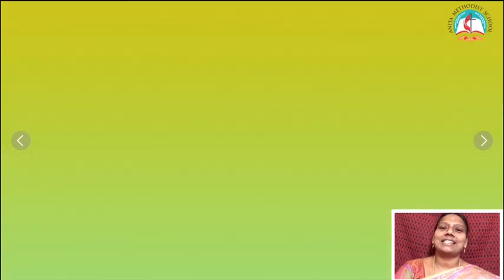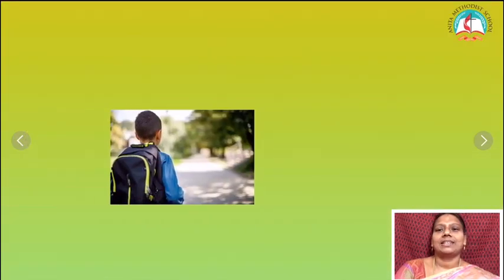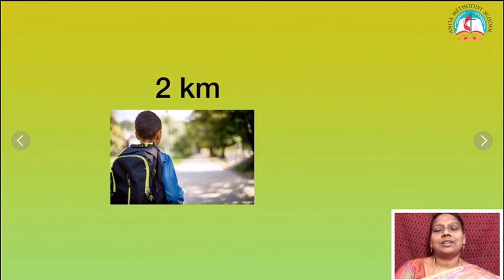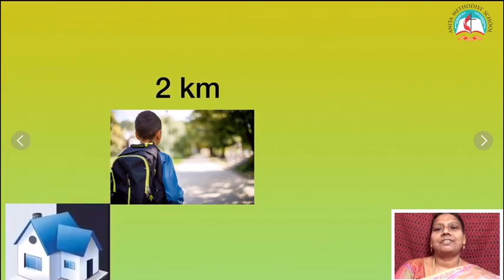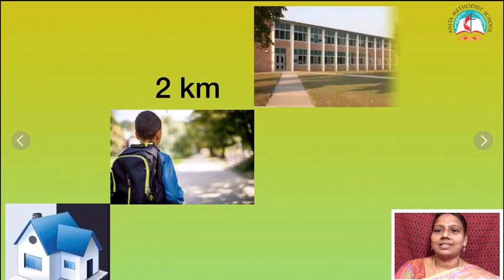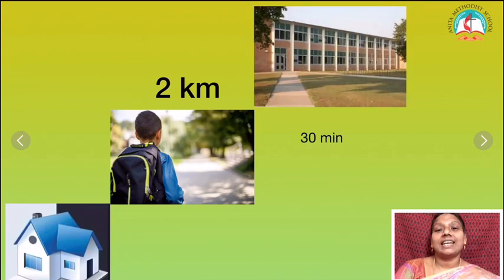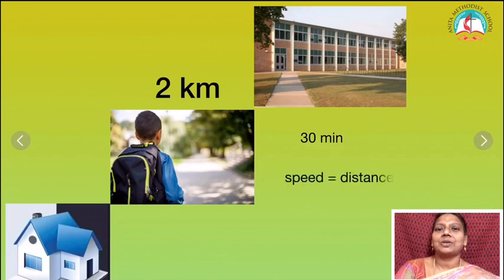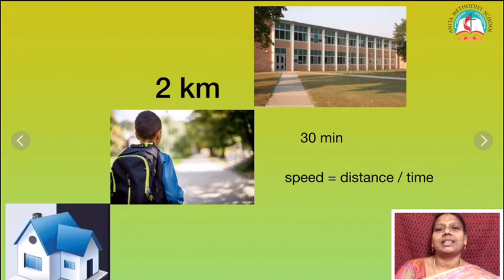Before we move to the lesson I am just giving you an example. Suppose if you are walking 2 kilometers from your house to school and it takes 30 minutes, then we can find out the speed — how fast you are walking. Speed: how can we find it? Distance divided by time taken. This is the usual thing.